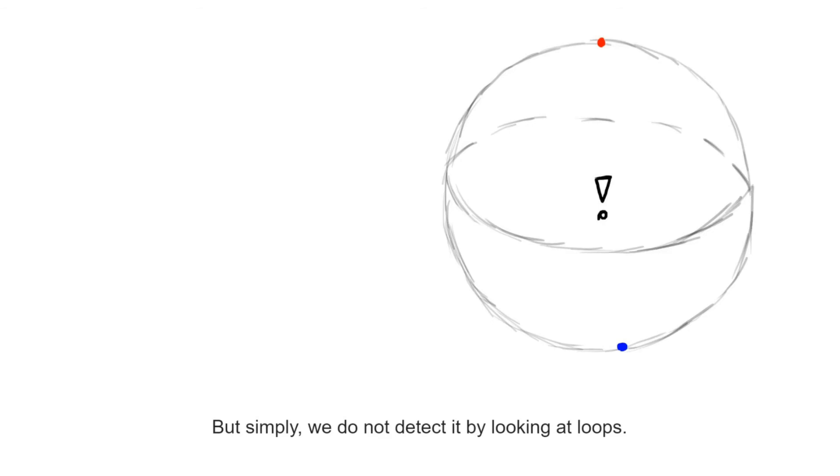What we gather from this is that there's different types of holes. Some of them we can detect using loops, but some others we have to detect through other means.